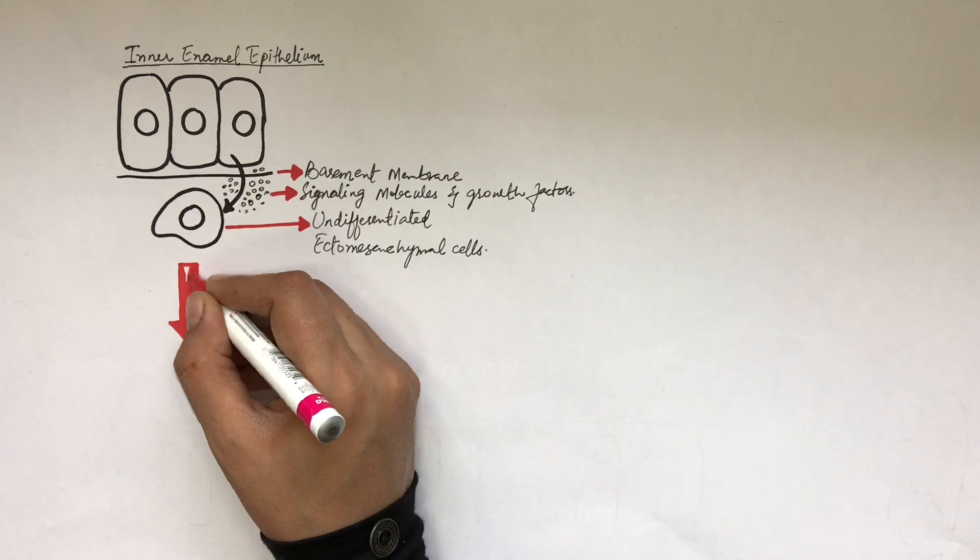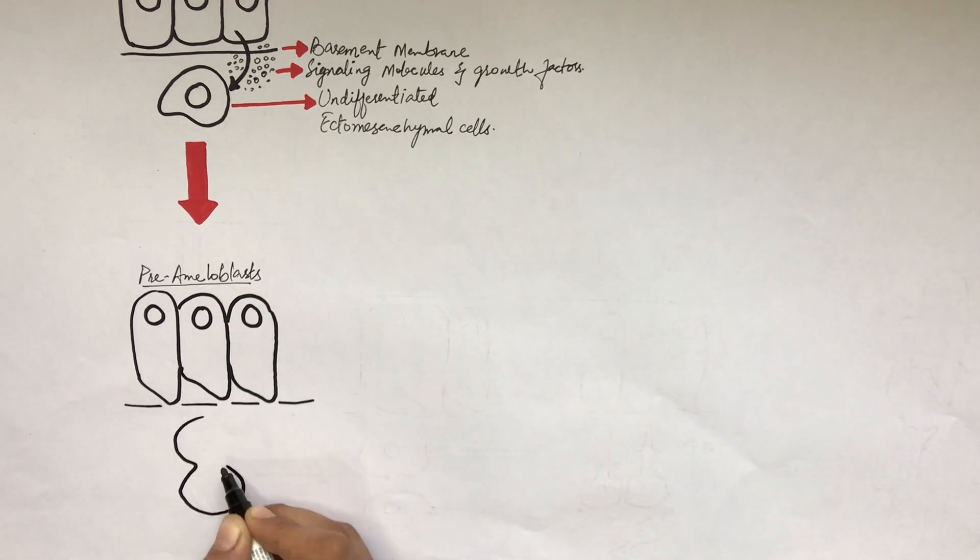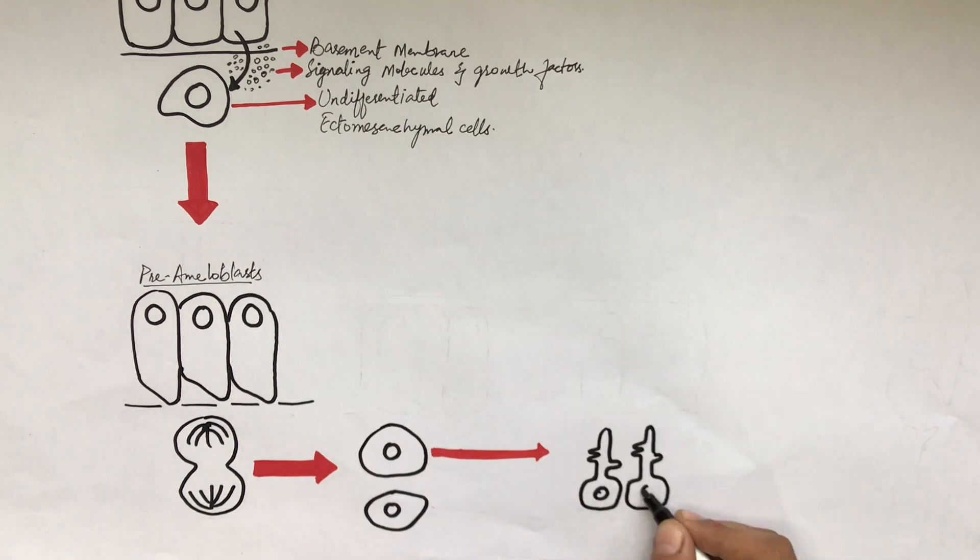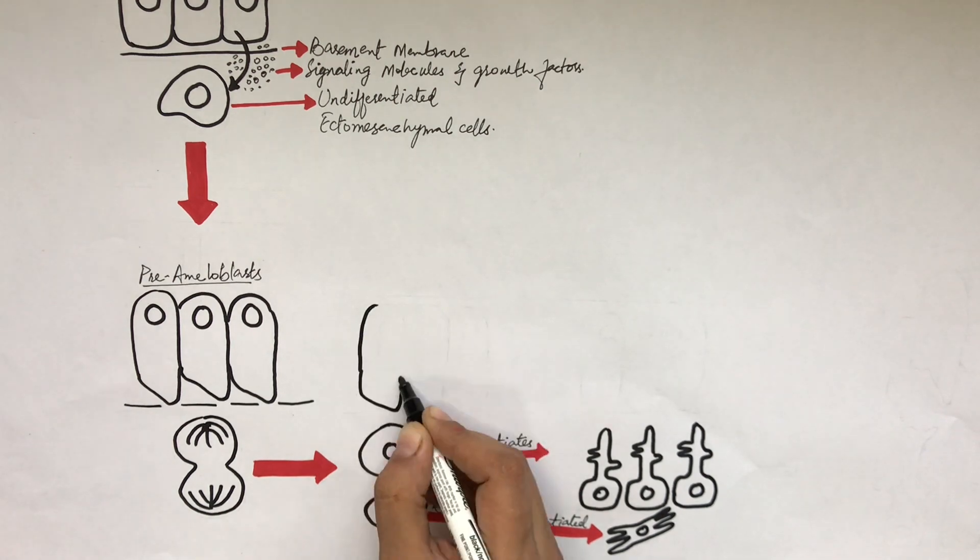As soon as the cells of the inner enamel epithelium differentiate into pre-ameloblasts, the underlying cells of the dental papilla will stop dividing and will form two daughter cells. Out of these two daughter cells, one will differentiate into pre-odontoblasts while the other will remain undifferentiated in the pulp of a tooth, which can be activated anytime by an external stimulus.